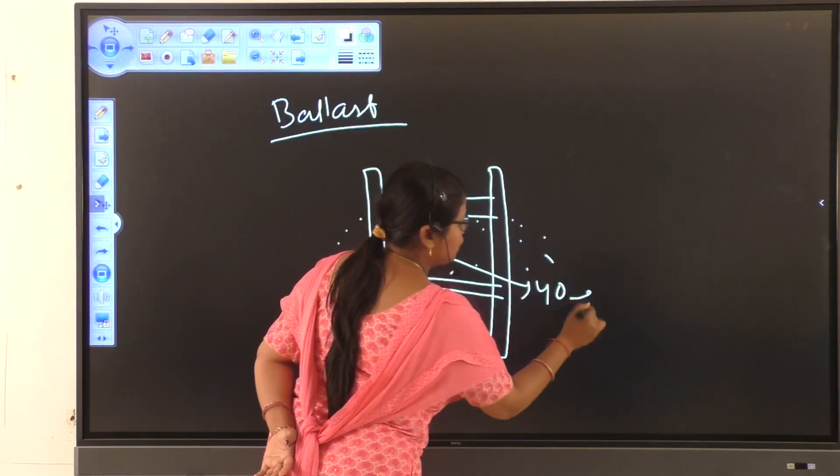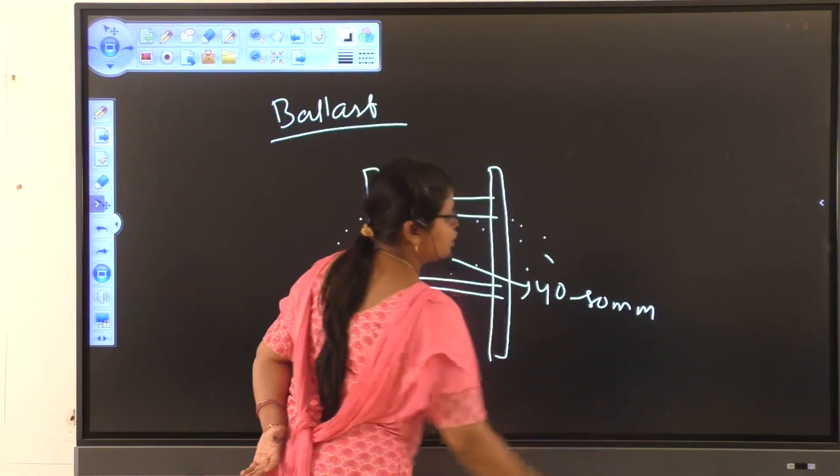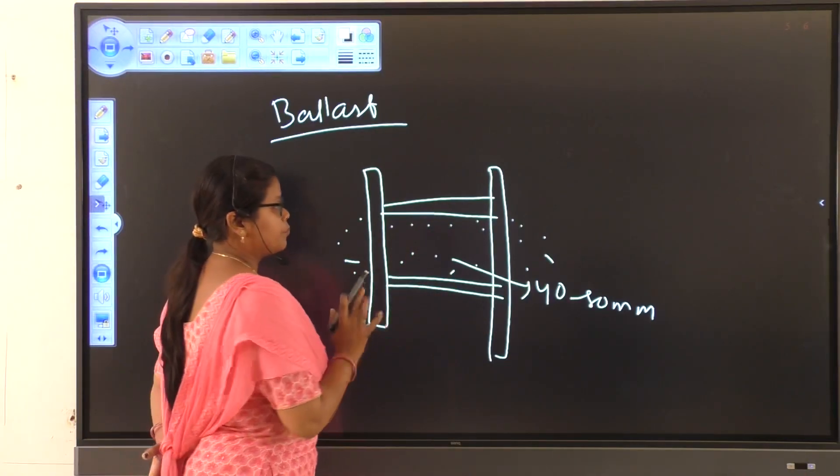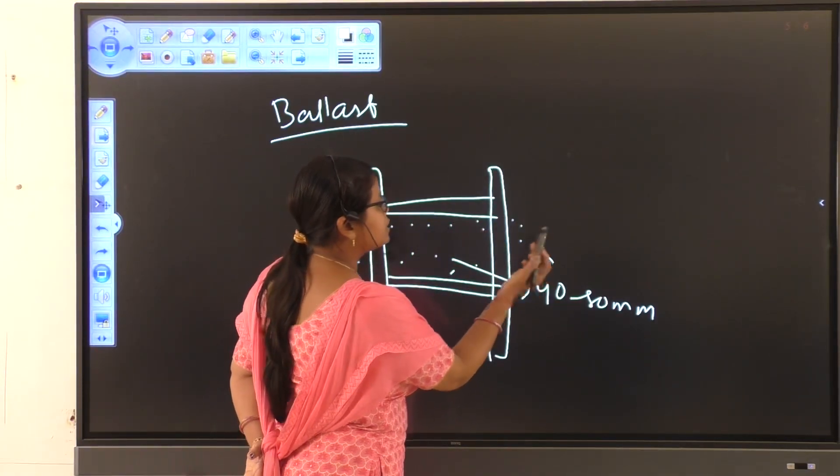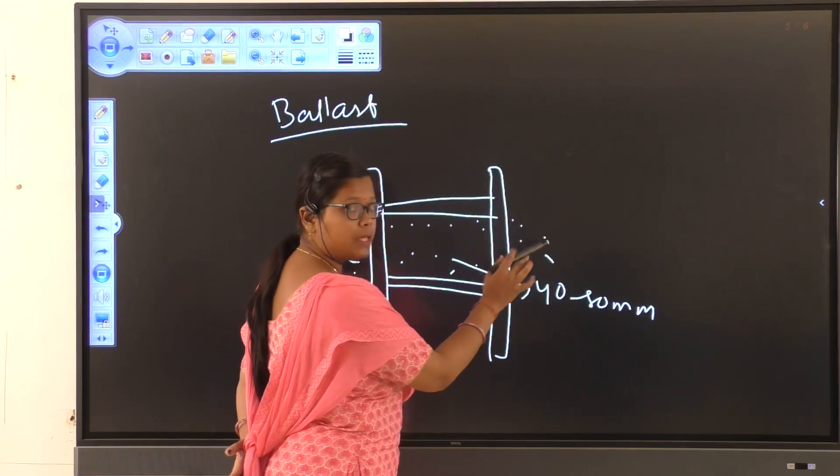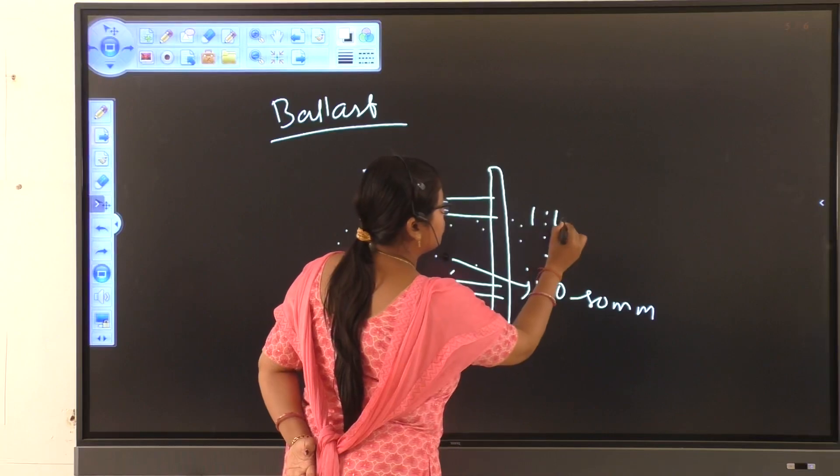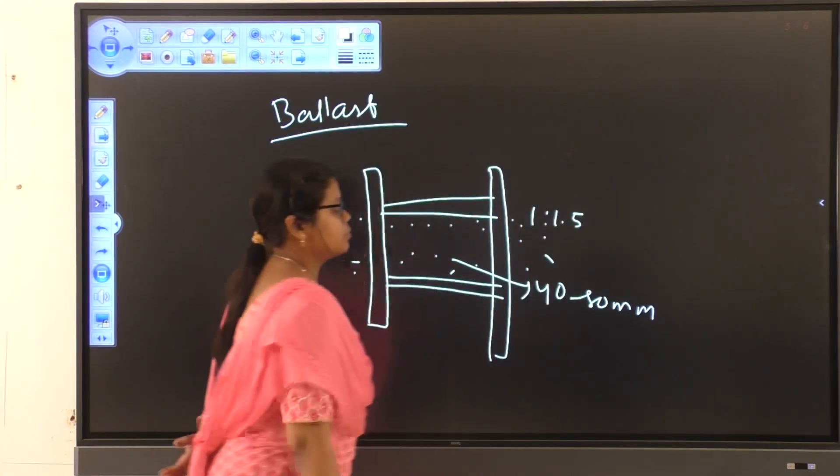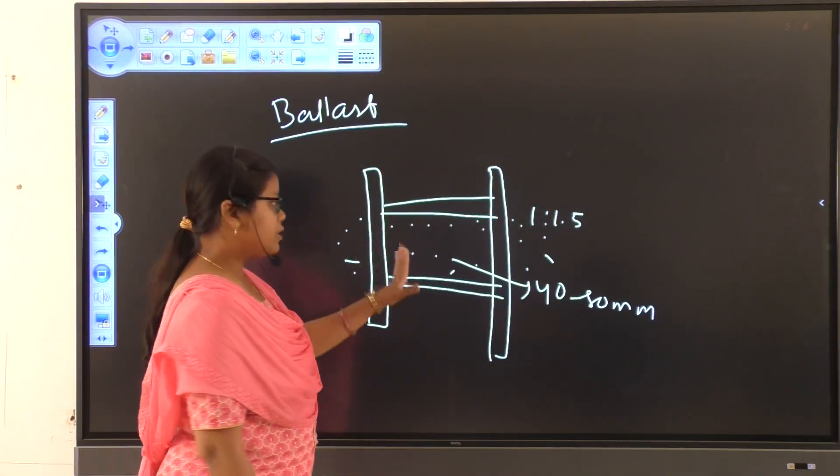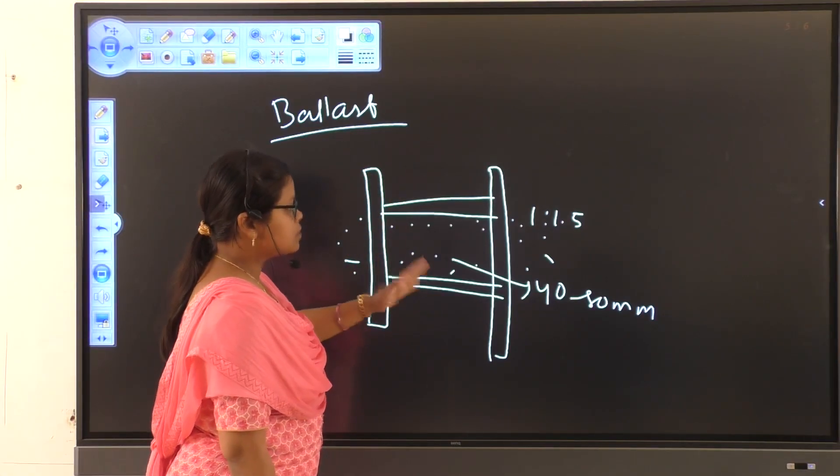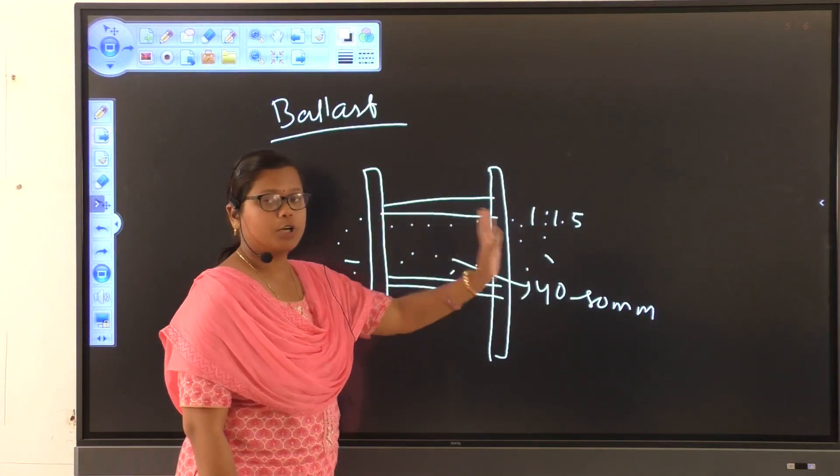Generally, the size of 40 to 80 mm is used between the two sleeper and the ballast which is placed on the formation level is placed on a slope of 1 is to 1.5. So, ballast is the material which is placed between the two sleeper and on the top of the formation level.